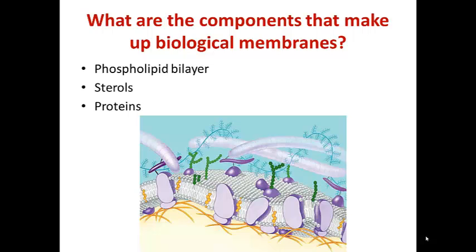What are the components that make up biological membranes? There are three major components. The first are the phospholipids that make up the phospholipid bilayer. Second are the sterols, like cholesterol, that affect the fluidity of that bilayer. And finally, we have the proteins, including those that are integral to the membrane — meaning they're embedded in the membrane — and those proteins that are associated with the surface.